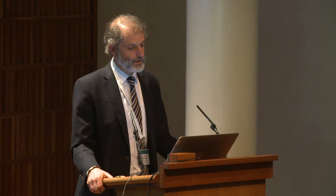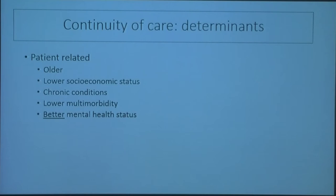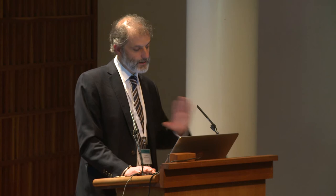What do we know in terms of what has been associated with increased continuity of care? Older people tend to have increased continuity of care. Lower socioeconomic status tends to be associated with increased continuity of care. The presence of chronic conditions as well. Very interestingly, lower multimorbidity — so patients, although the others would point in the direction of people more in need of healthcare receiving more continuous care, when it comes down to multimorbidity, the associations tend to point in the opposite direction. And better mental health status is also associated with increased continuity of care — again, one that you would argue should go the other way.